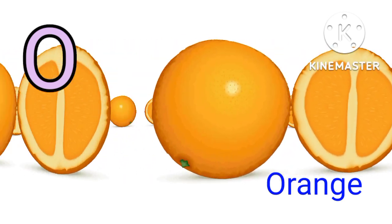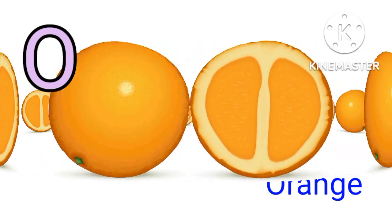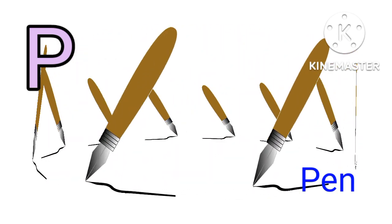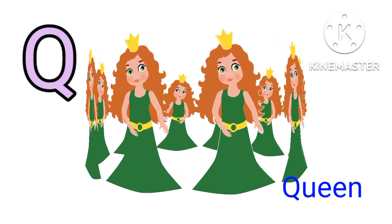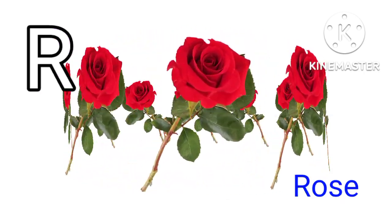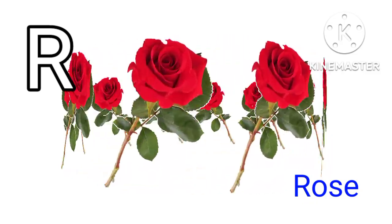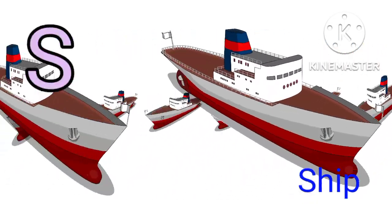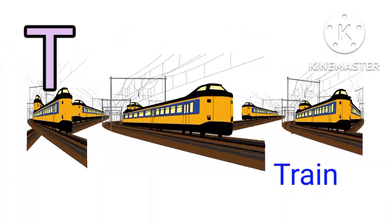O for Orange. P for Pen. Q for Queen. R for Rose. S for Ship. T for Train.